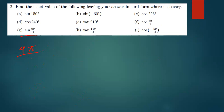For 9π/4, we convert similarly: π = 180°, so cross-multiplying gives x = (9/4) × 180° = 9 × 45° = 405°. Since 405° is greater than 360°, you subtract 360° to get the equivalent angle of 45°, which is in the first quadrant. From there, you can use the special angle values to find the final answer.